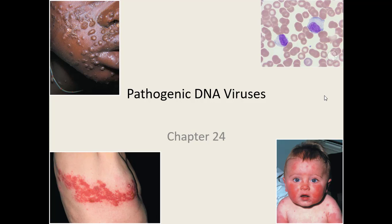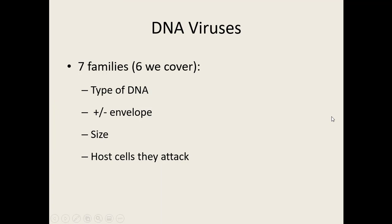In this lecture we're going to go over all the viruses that contain just DNA as their genetic material. There are lots of viruses out there, and we organize all the viruses that contain DNA as their genetic material into seven families. We're going to go over six of the families — really just the top organisms that cause disease in humans, as the others are rarer. The seven families are grouped based on the type of DNA they have, whether they have an envelope or not, their size, and which host cells they attack.